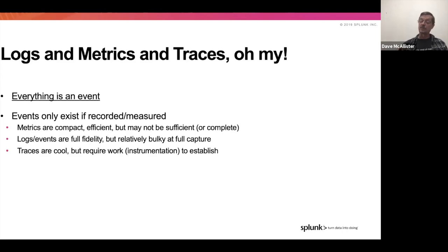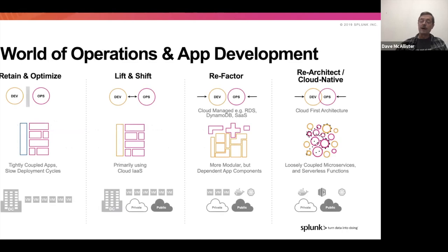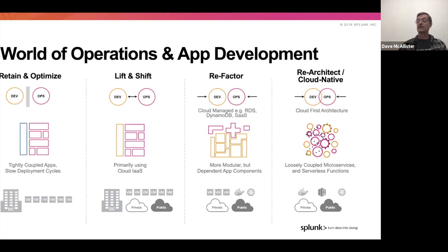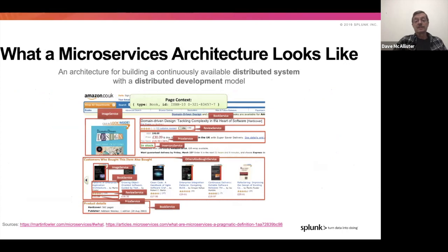Logs are linear; metrics are useful for alerting structures. We've seen that the world of operations and app development has changed. People are looking at refactoring, cloud mapping, architecting loosely coupled microservices, and serverless functions — be they public-private clouds, container-based, or FaaS-based. This is heavily powered by orchestration, by the need to manage and control these environments.